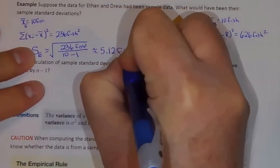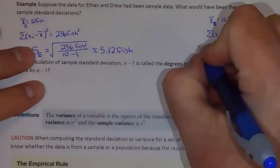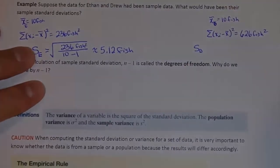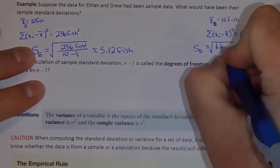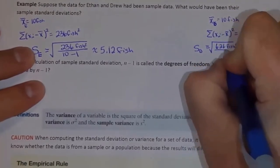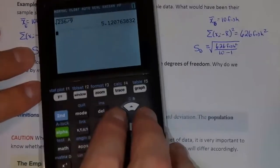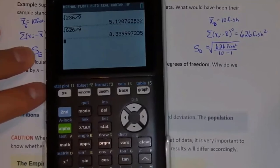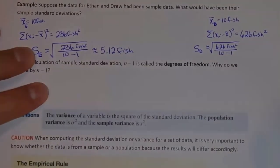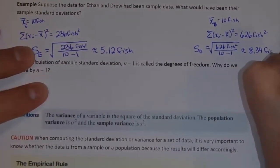And the units would be back to fish. Similarly for Drew, Drew's sample standard deviation would be the square root of 626 square fish divided by 10 minus 1 — in other words, really divided by 9. So if I take the square root of 626 divided by 9, that would be about 8.34, and again the units would be back to fish.